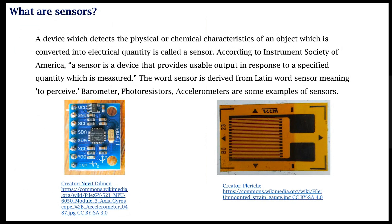An example shown is the MPU-6050, a six-axis inertial motion unit with a three-axis gyroscope and three-axis accelerometer. More advanced forms include the MPU-9250, which also comes with magnetometers. Other IMUs come with their own inbuilt microcontroller, complementary filters, and fusion algorithms. Also shown here is a strain gauge sensor.